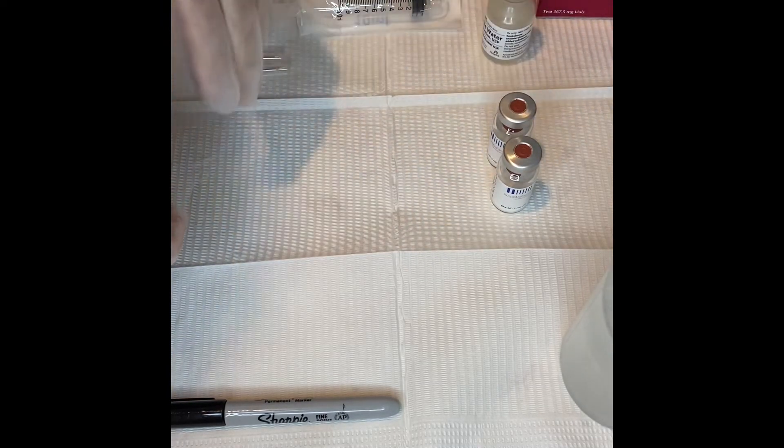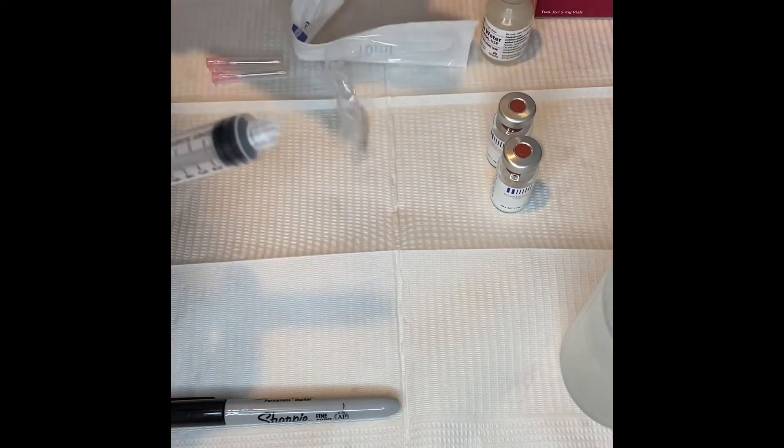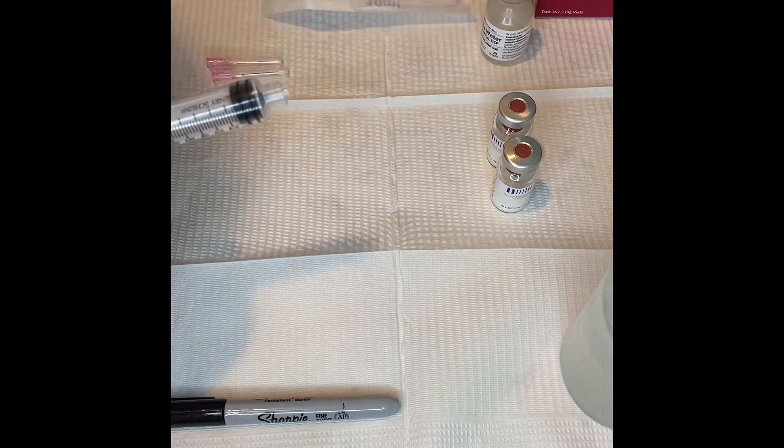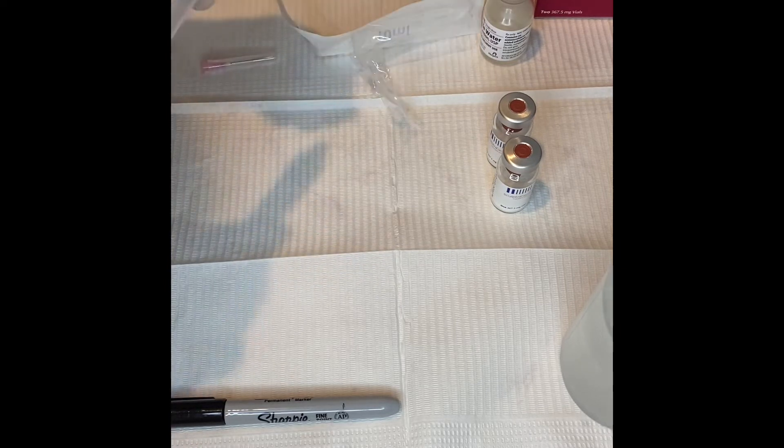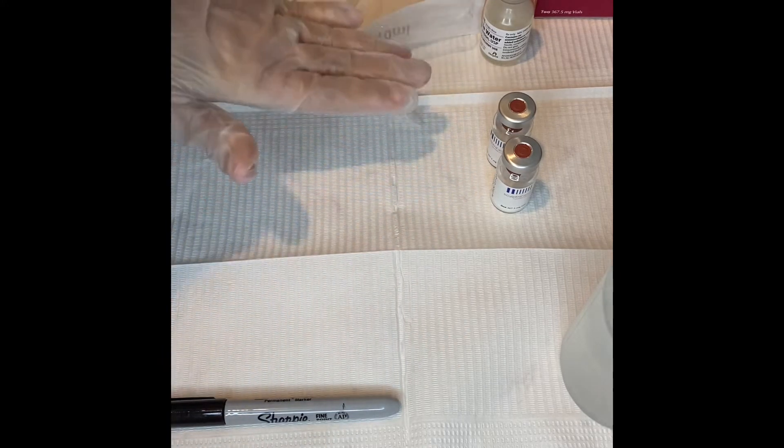I've already wiped off the tops with alcohol and you're going to make sure to do this 72 hours before the Sculptra is injected. So we're going to do a pre-mix of six cc's of sterile water per vial.